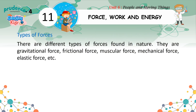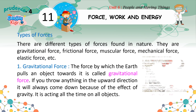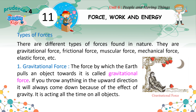There are different types of forces found in nature. They are gravitational force, frictional force, muscular force, mechanical force, elastic force, etc. Gravitational force: The force by which the earth pulls an object towards it is called gravitational force. If you throw anything in the upward direction, it will always come down because of the effect of gravity. It is acting all the time on all objects.